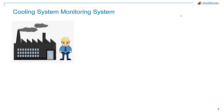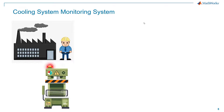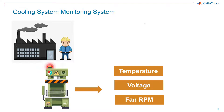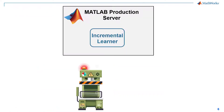Before we dive into the actual demo, let's understand the context of an industrial monitoring system. Imagine a plant with machinery that generates heat, and cooling equipment like fans keep the temperature from rising. A human operator is available to intervene when an issue arises. To facilitate automated monitoring, the equipment is instrumented with sensors that deliver the temperature of the machinery, the voltage applied to the cooling equipment, and the actual fan speed.